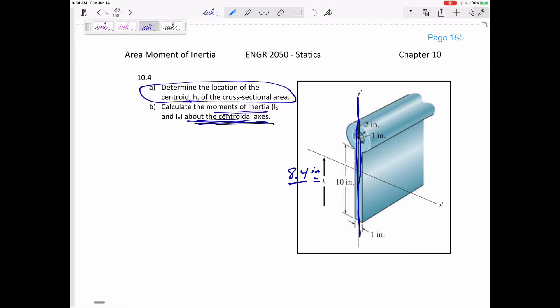Y bar we knew it was straight down the middle, right? The centroid was straight down the middle because it's symmetric. X bar, we needed to have calculated it. It's 8.4. All right, so if we know this is 8.4 inches, let's find the moment of inertia